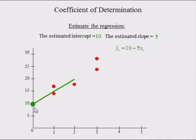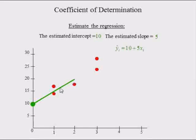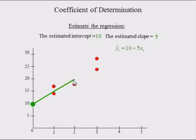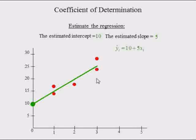Go to the right 1 ad and up 5 cars — that's the slope. When the ads increase by 1, the average number of cars sold will increase by 5. Again, when we run one more ad, the average number of cars sold will increase by 5.